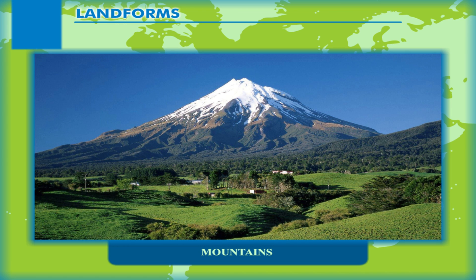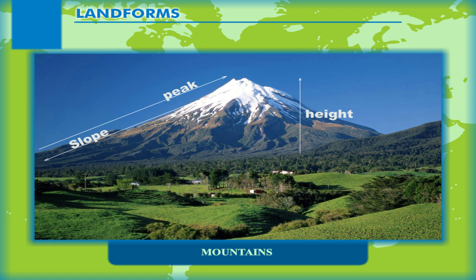The mountains are the lifted parts of the earth which have marked slopes and peaks. A mountain can be defined as any natural elevation of the earth's surface. It is considerably higher than the surrounding area.